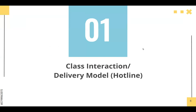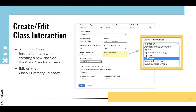First, the class interaction slash delivery model, which also gets displayed on the hotline. This is a class descriptor associated with every class that you create in SID. What you see here is the class creation screen or the class edit screen, and what we have highlighted is the toggle for what we call the class interaction. Until late fall last year, the options under that toggle were group or individual.